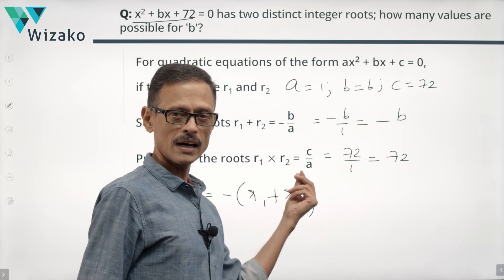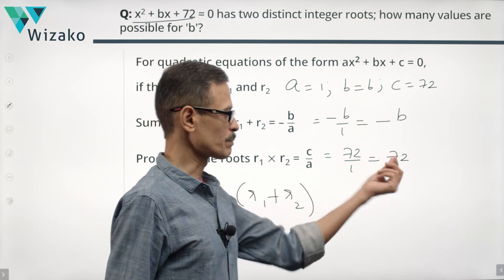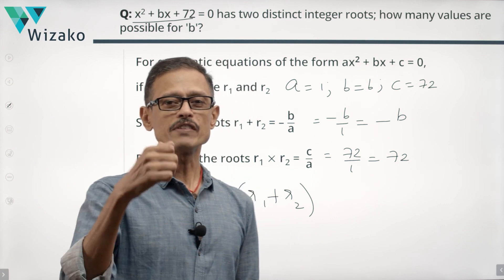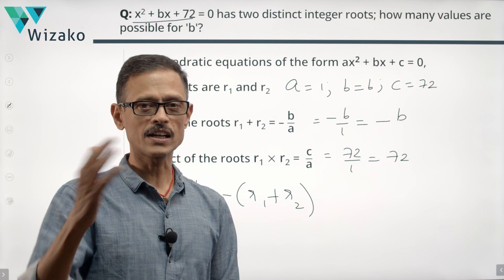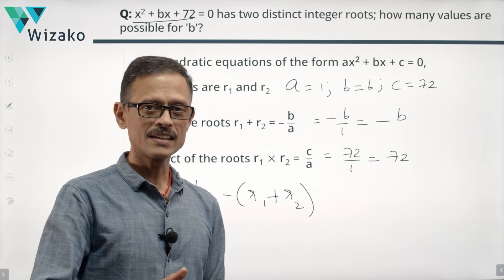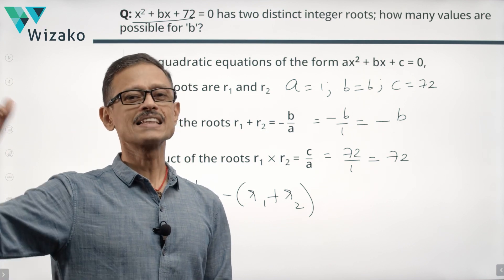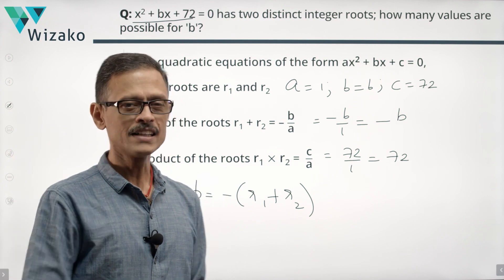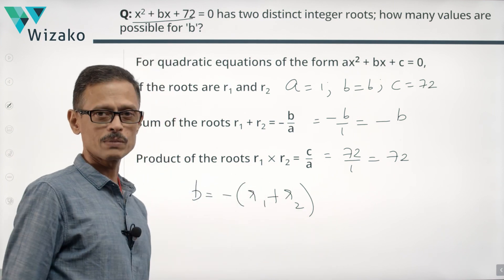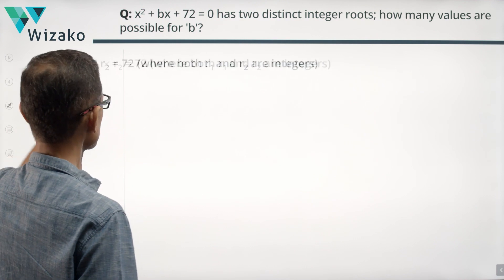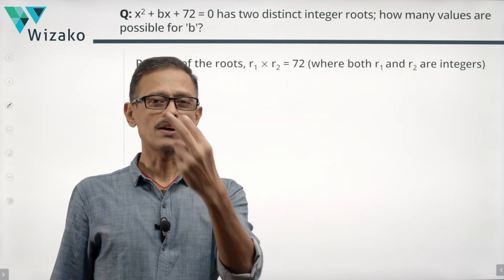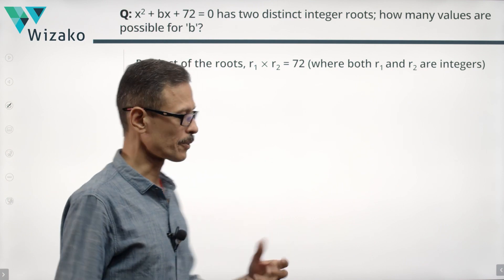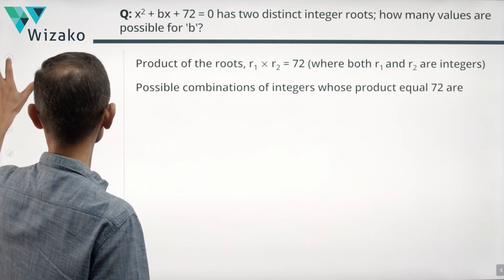If R1 and R2 are distinct integers and their product is equal to 72, all that we need to do is list down different integer combinations for R1 and R2, which will give a product of 72. Let's do that, compute R1 plus R2, and then evaluate the values that B can take. So B is nothing but minus of R1 plus R2.